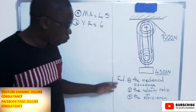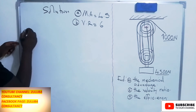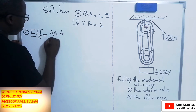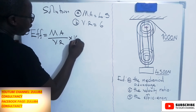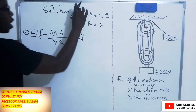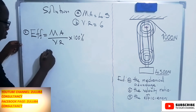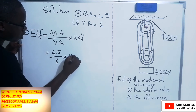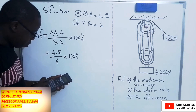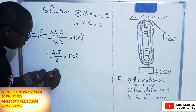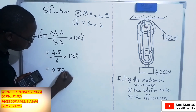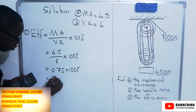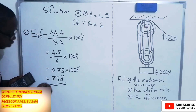The third question is asking us to find the efficiency of this pulley system. Efficiency is equal to mechanical advantage divided by the velocity ratio, multiplied by 100%. From parts A and B, the mechanical advantage is 4.5 and the velocity ratio is 6. So 4.5 divided by 6 gives us 0.75, and multiplying by 100% gives us 75% as the efficiency.